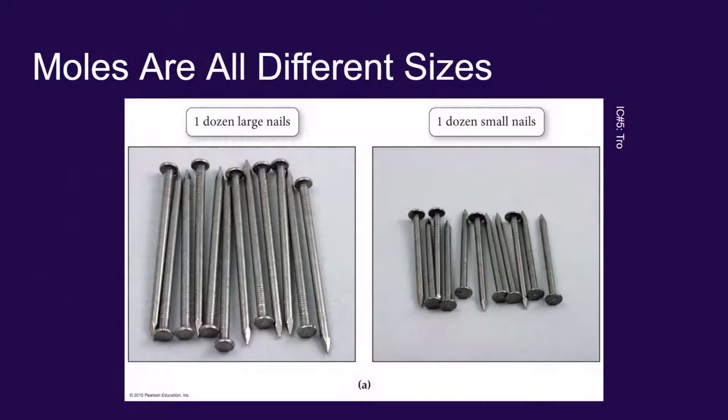At first it might seem weird that moles can be different sizes and have different masses. But if we go back to our examples of a dozen, and we go back to the hardware store, we know that a dozen nails might have a different size than a dozen nails. The size of the dozen is based on the size of the individual units, and the size of a mole is based on the size of the individual particles. So let's try some more conversions.